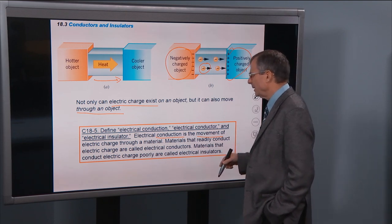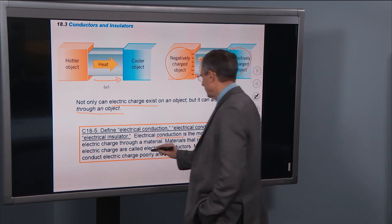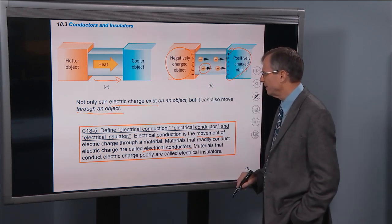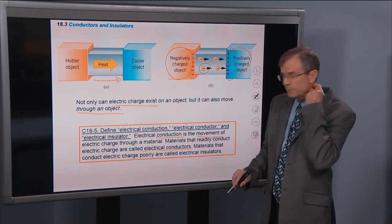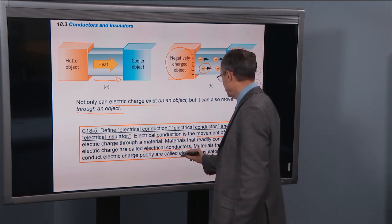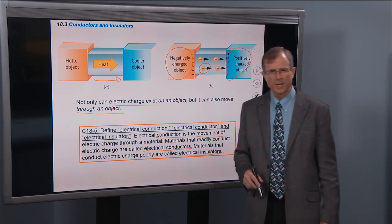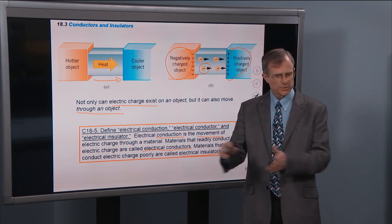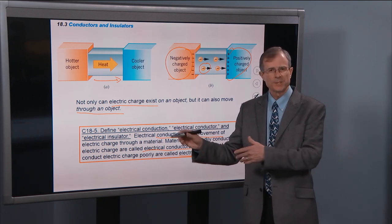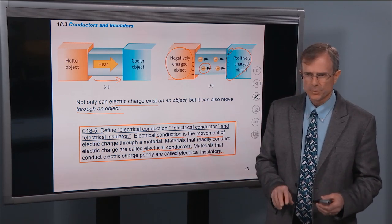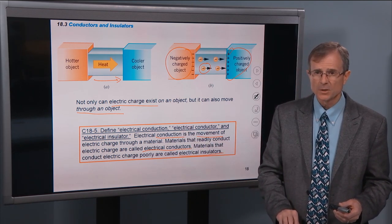Materials that readily conduct electric charge are called electrical conductors. And materials that conduct electric charge poorly are called electrical insulators. And we'll talk more about conductivity later in the later chapters. But for today, a conductor is one that conducts charge, that charge moves through reasonably freely. An insulator is one that it doesn't move through so freely. That's all there is to it.